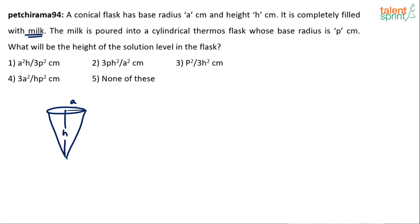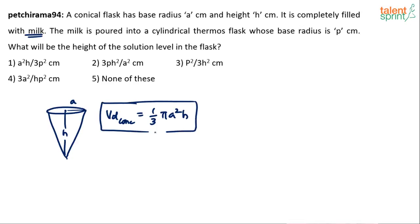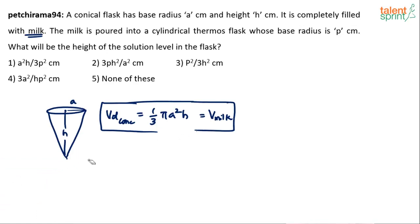If the conical flask is completely filled with milk, the volume of the milk equals the volume of the cone. The volume of the cone is (1/3)πr²h, where r is a, so it becomes (1/3)πa²h. This is the total volume of the milk. Because it is completely filled, we don't need to worry about anything else.